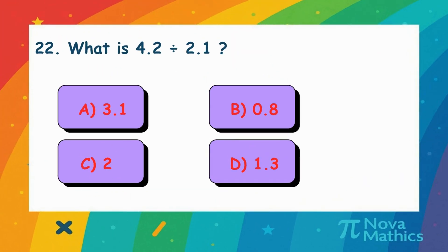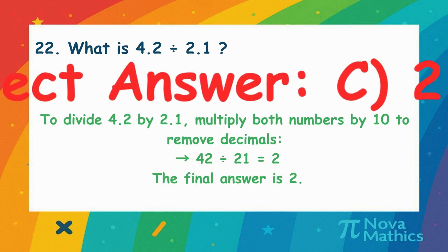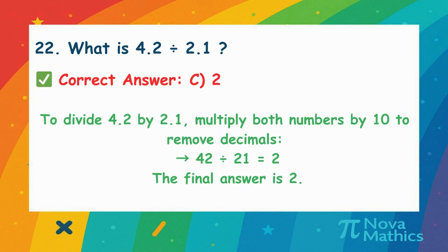21. What is 4.2 divided by 2.1? We want to divide 4.2 by 2.1. Multiply both by 10 to make them whole numbers. 42 divided by 21 equals 2.